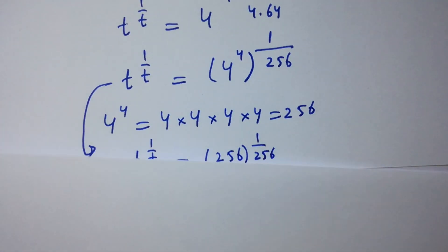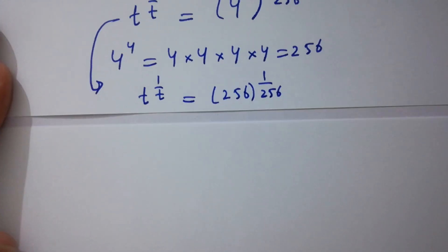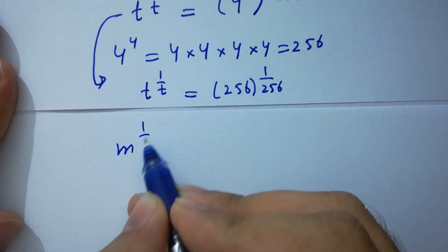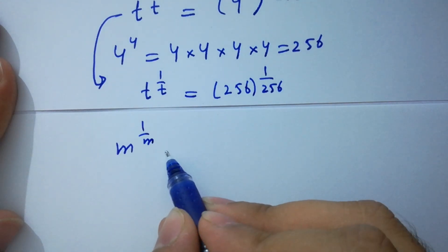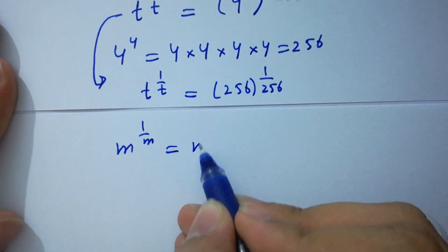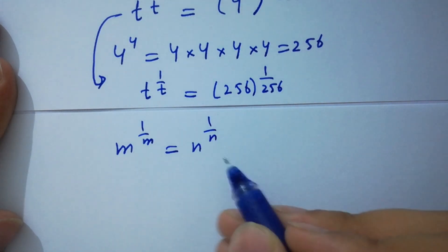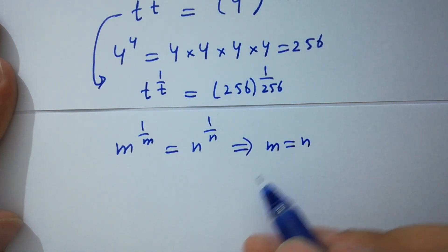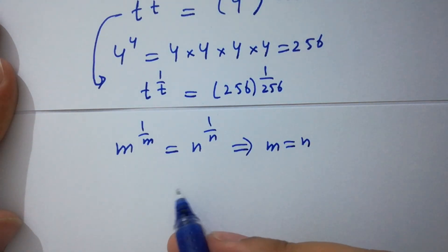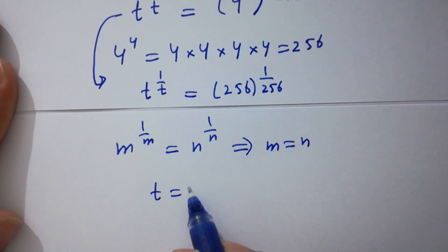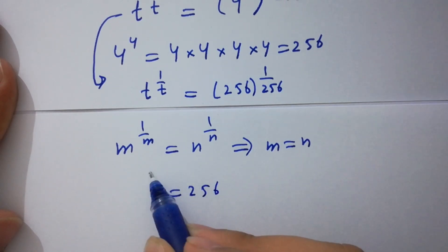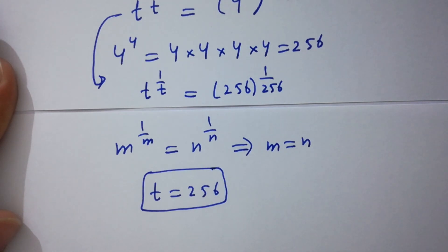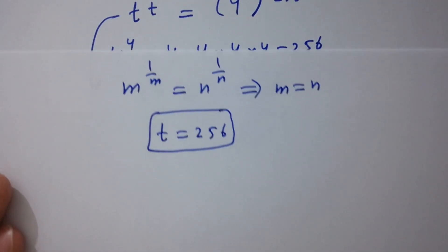As we know, if m to the power 1 over m equals n to the power 1 over n, then m equals n. So t will be equal to 256, which is the value of t. In the next step I am going to verify.